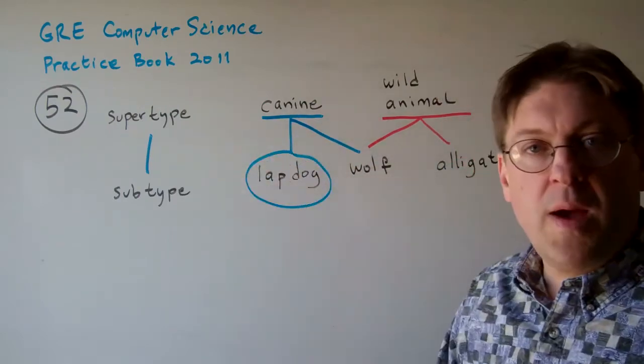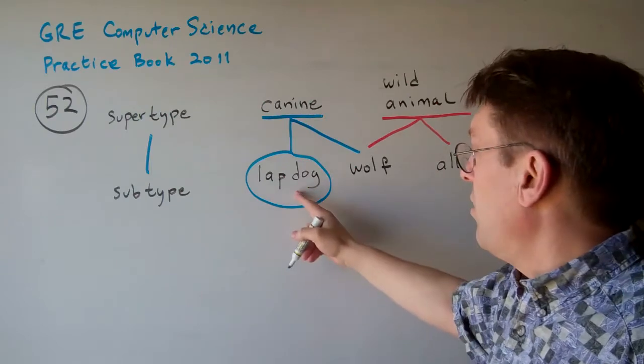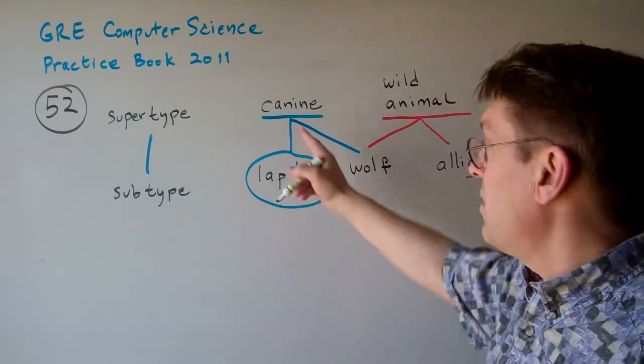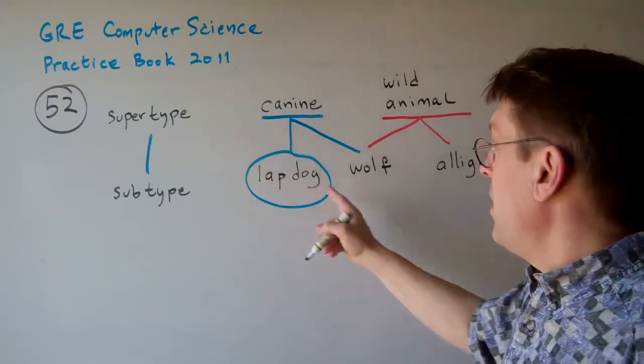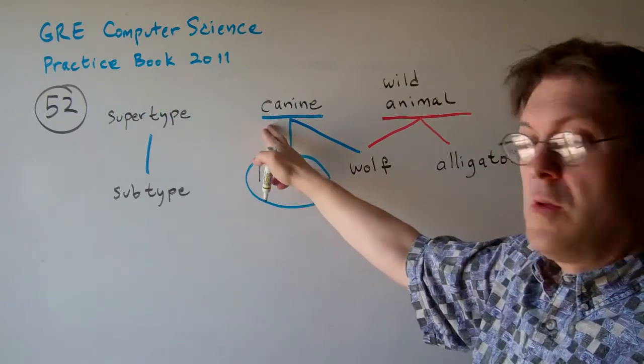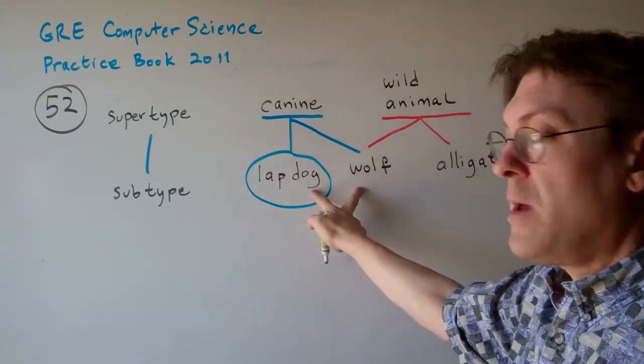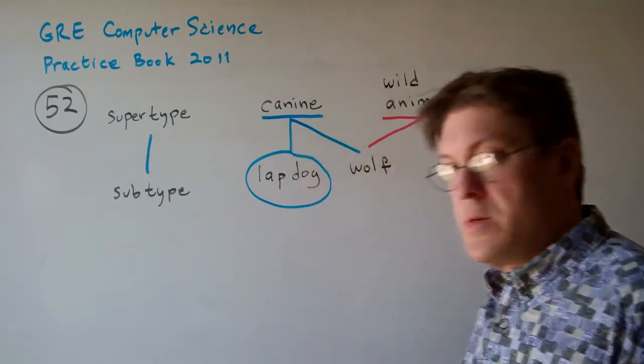So canine might be has teeth, has fur, but a lap dog might be lives at home. That's not necessarily a property of canine, but has teeth and has fur would be part of this supertype. But these subtypes would have more constraints in there, more operations supported.